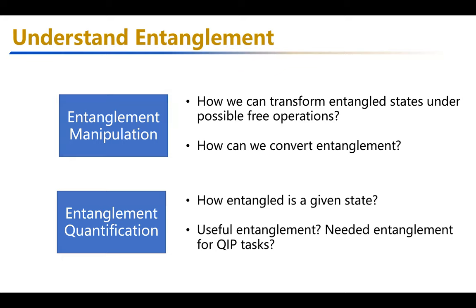To understand entanglement there are two major methods. First, you need to understand how to do entanglement manipulation — that is about how we can transform entangled states under possible free operations and also how we can convert entanglement in various tasks. The second is quantification — that is about how entangled your given state is. You can quantify it via operational tasks like distillation or through mathematical entanglement measures or other functions.